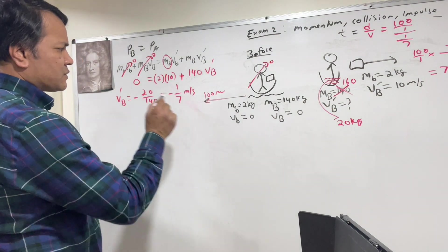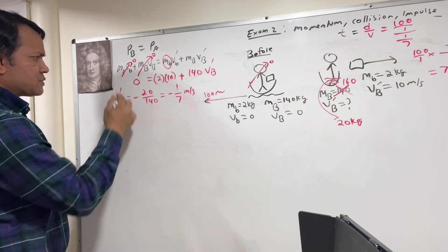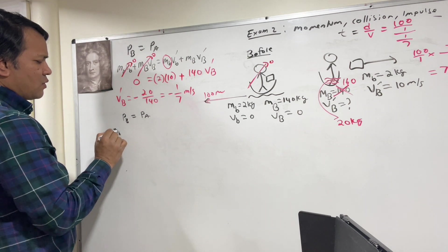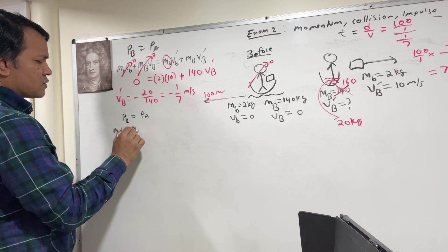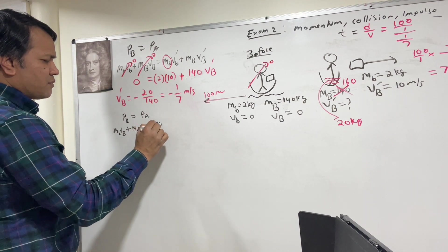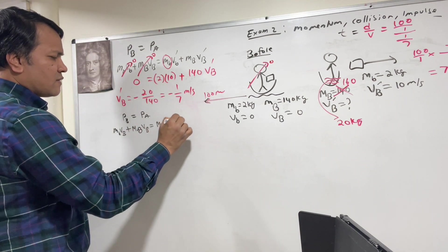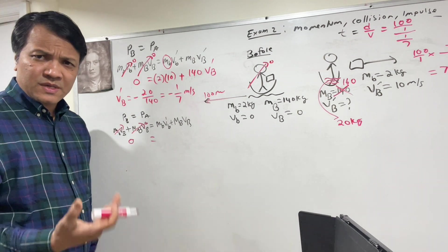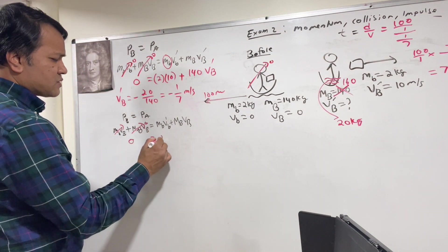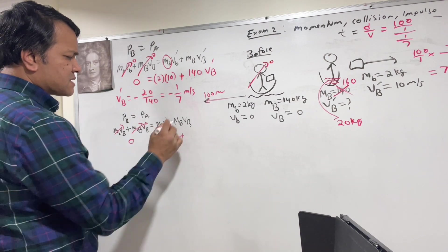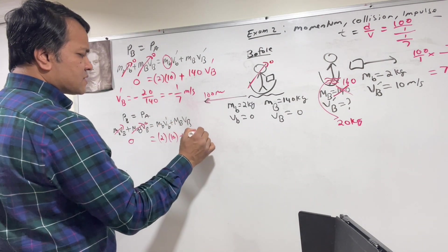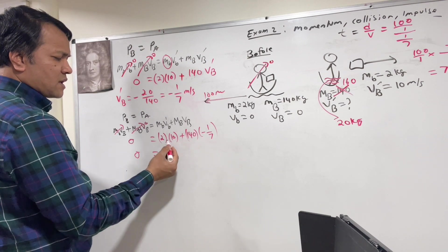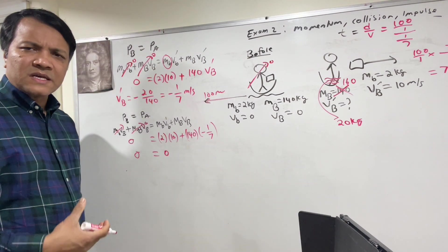But before we do that, we're going to check whether momentum is conserved: P_before = P_after. So M_book × V_book + M_boat × V_boat before equals the same after. Before is 0. After: 2 × 10 + 140 × (−1/7) = 20 − 20 = 0. So yes, momentum is conserved.